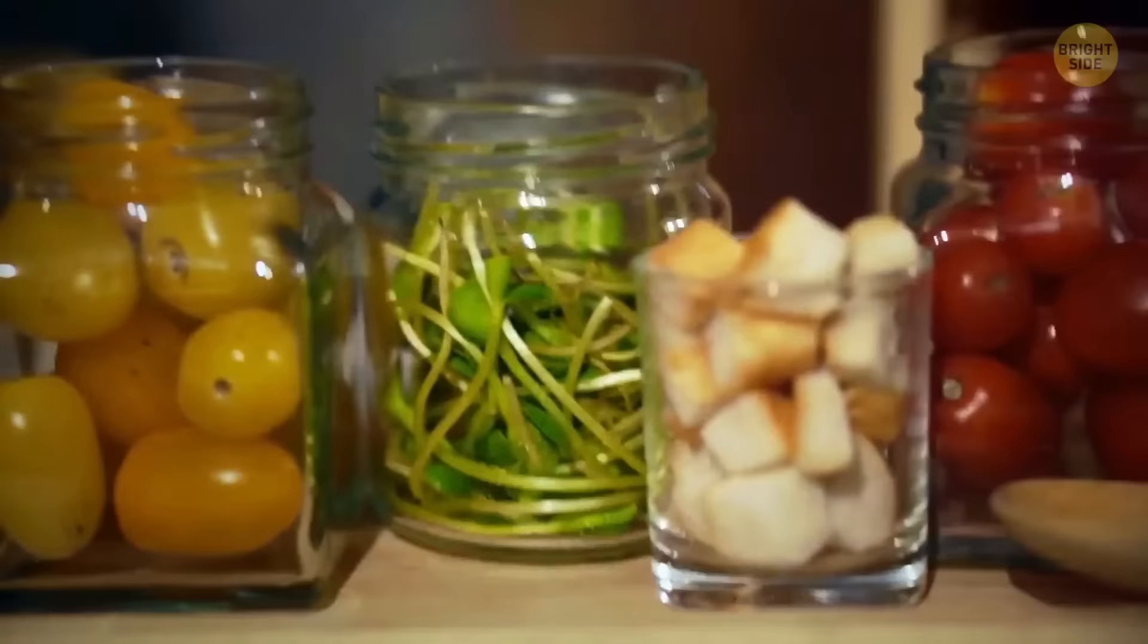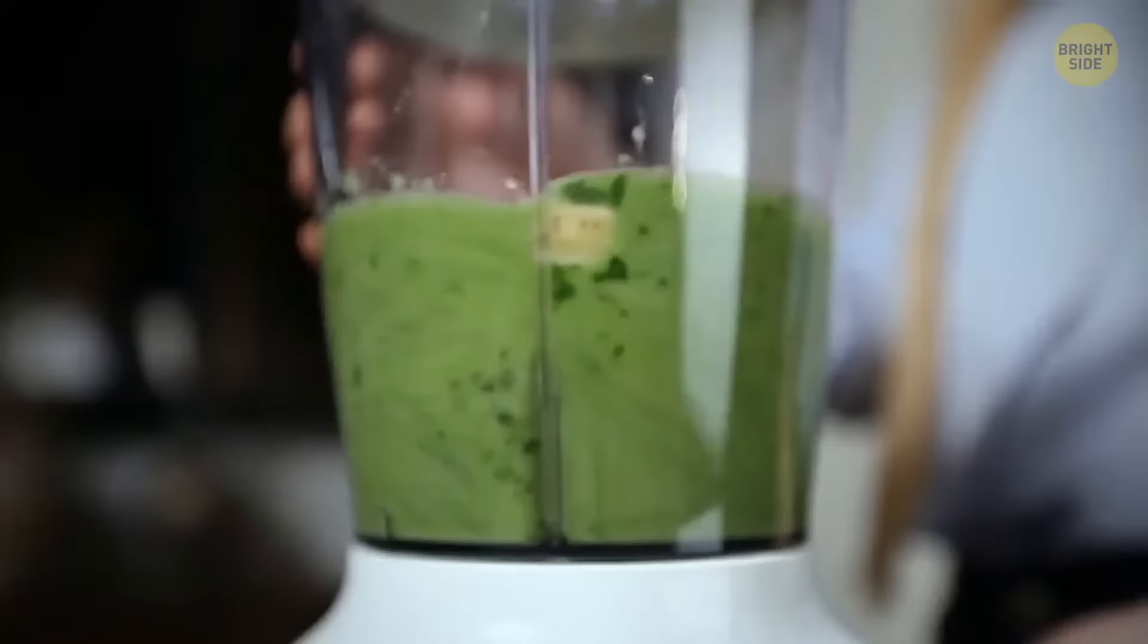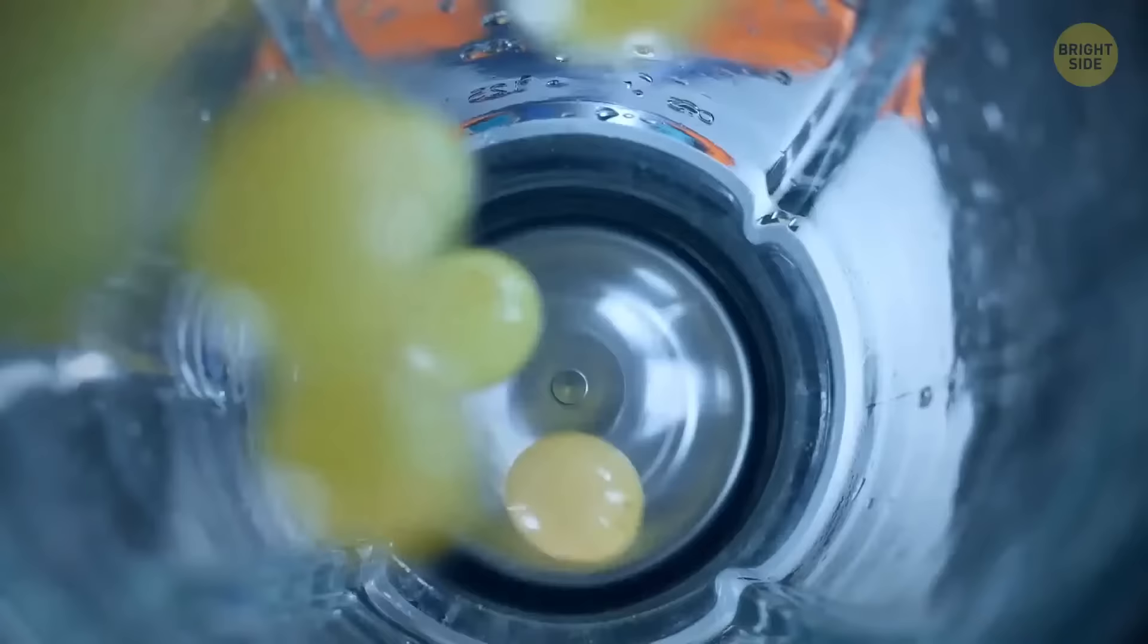Now, if you have a mason jar and a blender with a screw on top, this secret is life-changing. You can actually put a mason jar directly onto the blender and make any shake you want without having to wash the blender jar. Just don't put your device on max.